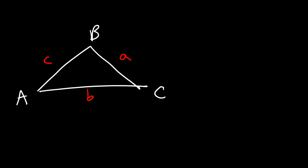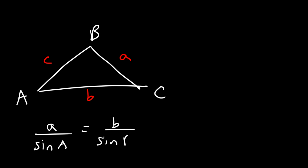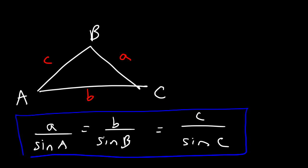The capitalized letters represent the angles and the lowercase letters represent the side lengths. Here's the equation: side A over sine A is equal to B over sine B, which equals C over sine C. You can use this equation, known as the law of sines, to find any missing angles or sides in a triangle.